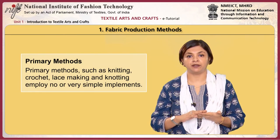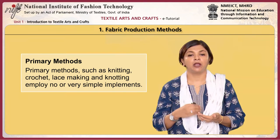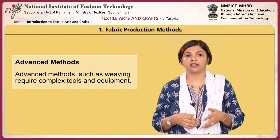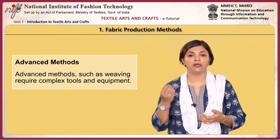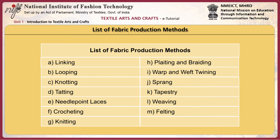These techniques can be further distinguished as primary methods and advanced methods. The primary methods such as knitting, crochet, lace making and knotting employ none or very simple implements. Advanced methods such as weaving require complex tools and equipment. The various methods of producing fabrics are: linking, looping, knotting, tatting, needle point laces, crocheting, knitting, plaiting, braiding, warp and weft twining, sprang, tapestry and weaving.